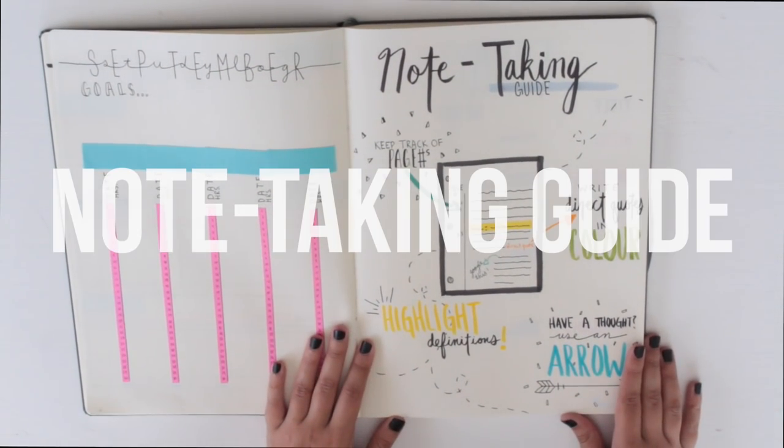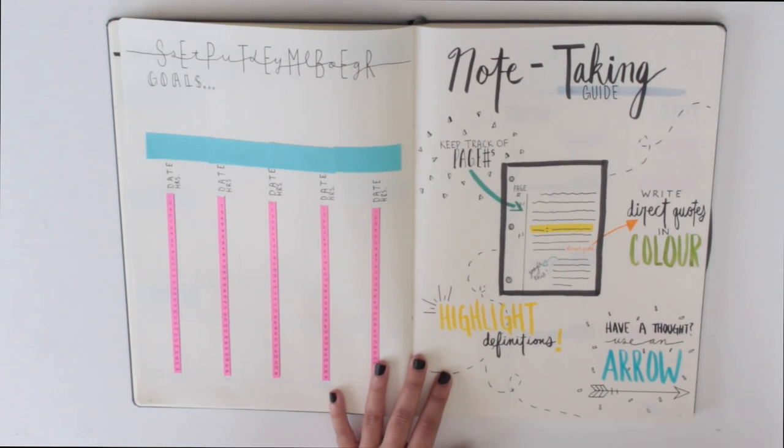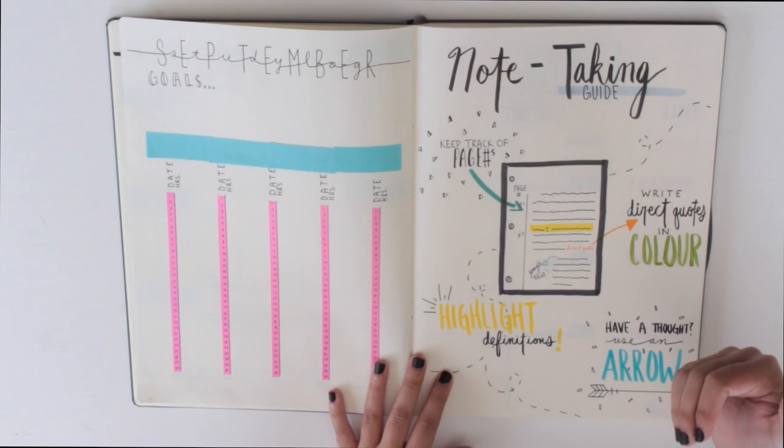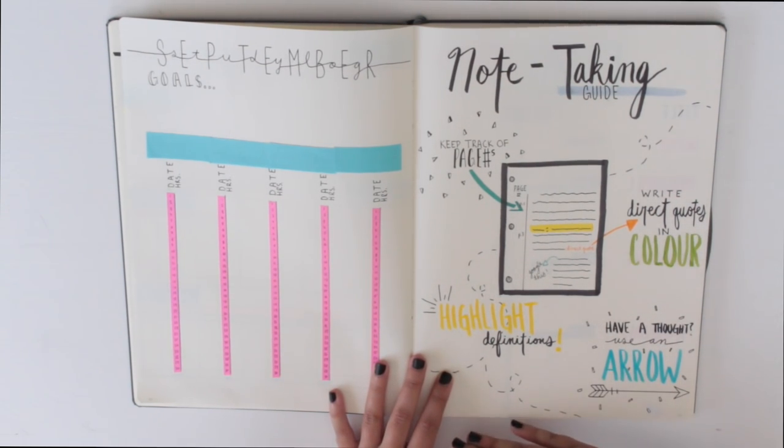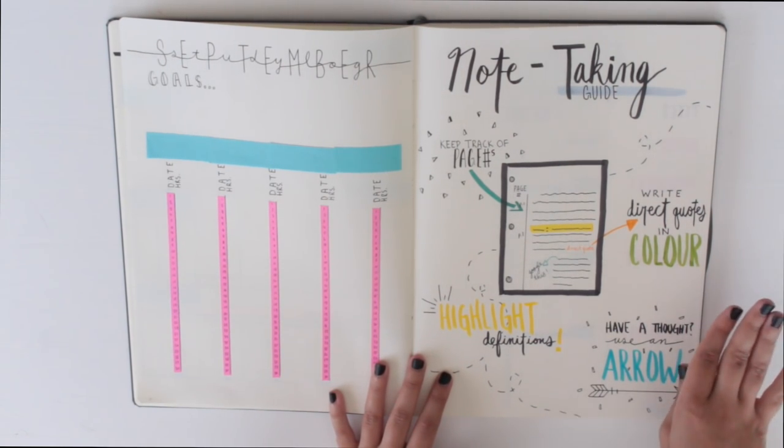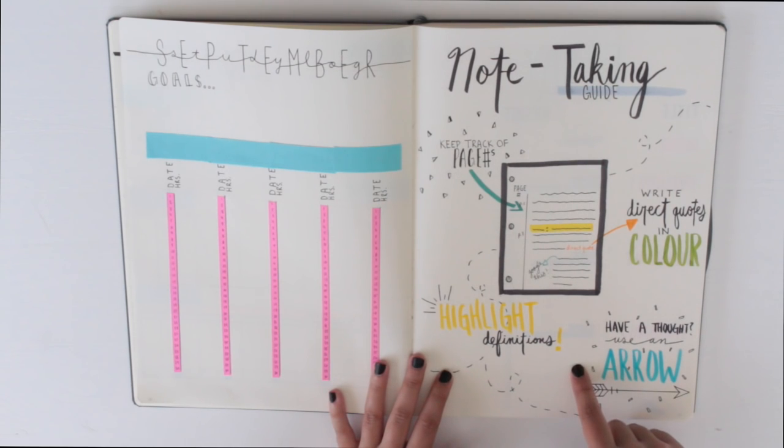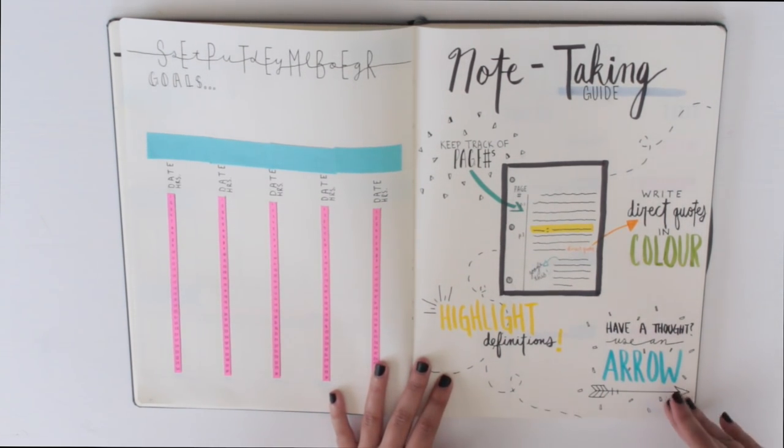I don't know if any of you out there plan on doing your notes directly in your bullet journal. I personally don't because I think I'll have too many, especially because I have a lot of textbook notes to do. I just usually do those notes in a spiral notebook. But if you're going to use or if you are going to take notes in your bullet journal or you just want some general note taking tips, then these are the things I've come up with.